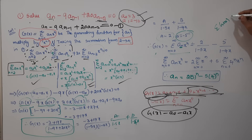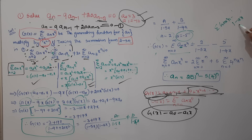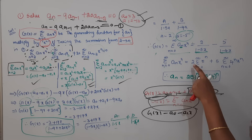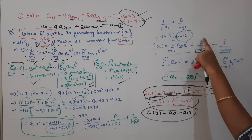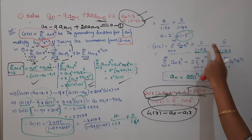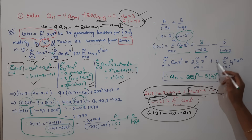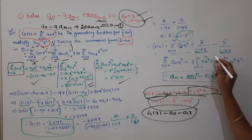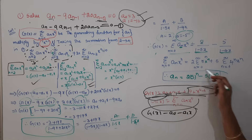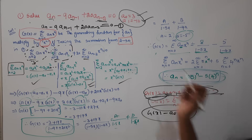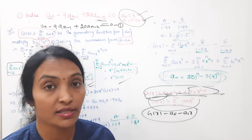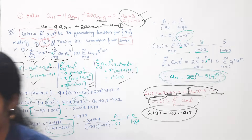Comparing both sides: the generating function definition gives us aₙ equals the required coefficient. The x to the power n terms cancel on both sides, and the summation also cancels. Therefore, aₙ is our required solution of the given recurrence relation. All the best for your exams. Thank you.